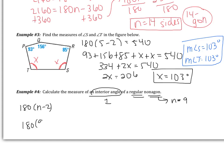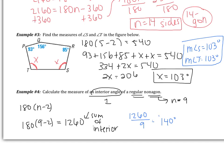Using the formula with nine sides gives 1,260 degrees — this is the sum of all interior angles. Since the question asks for one interior angle of a regular nonagon, divide by 9 to get 140 degrees. This only applies to regular nonagons where all angles are congruent.